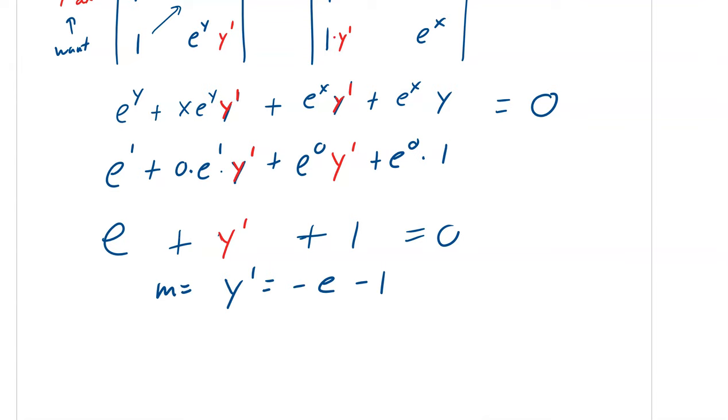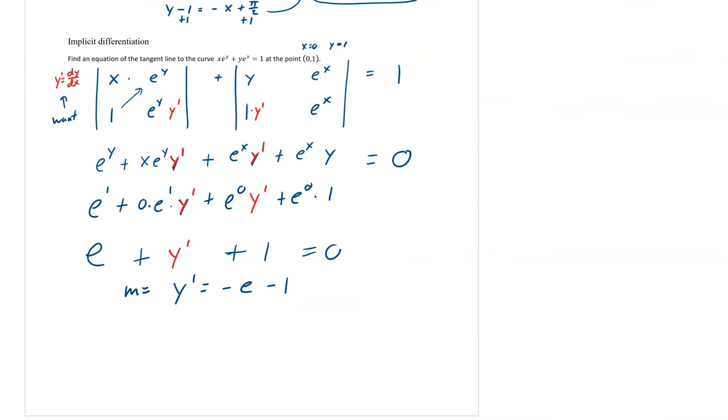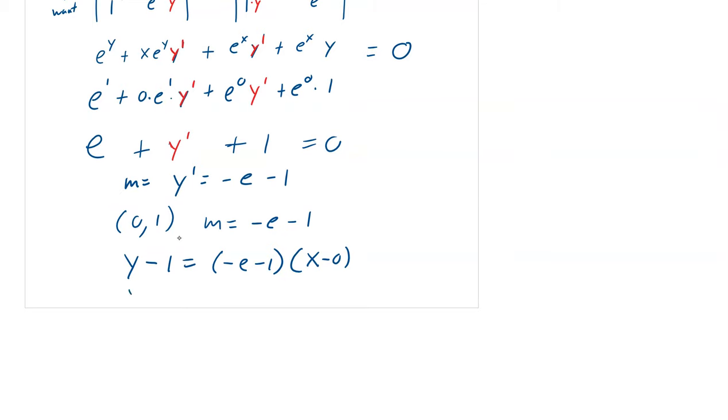And so see, we get this nice clean equation to solve for. So y prime is negative e minus 1. And that's our slope. So our slope at that point, at 0, 1. So if we take our point 0 comma 1, and our slope is negative e minus 1, we get our equation. So y minus our y coordinate, and then negative e. You have to put this in parentheses as a slope, x minus 0. And so we can solve this for y if we want, or we can just leave it as this. Or you can distribute it. So your choice, leave it that way, or put negative e minus 1x plus 1.